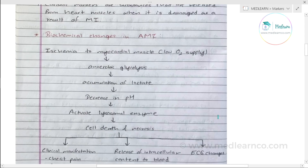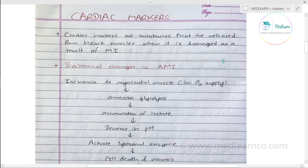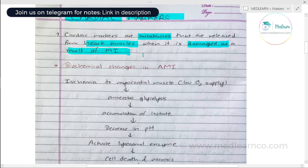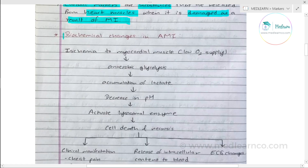We are going to talk about cardiac biomarkers. These are substances that are released from heart muscles when they are damaged as a result of MI — myocardial infarction — when cardiac myocytes are damaged.